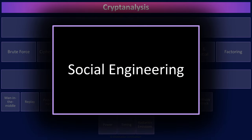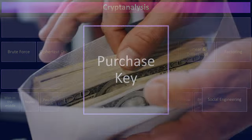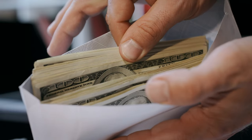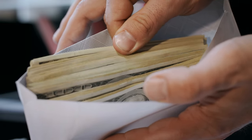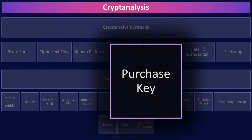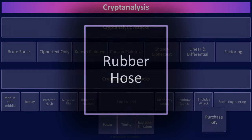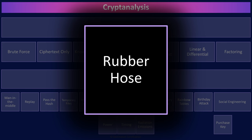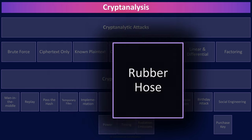The final, truly excellent way of attacking a cryptosystem is by targeting the weakest link in any system: people. Often the easiest way to figure out a super secure key is to just bribe someone — thus the 'purchase keys' attack. Or, if the carrot approach doesn't work, move on to the stick and torture someone. This is rubber hose cryptanalysis.